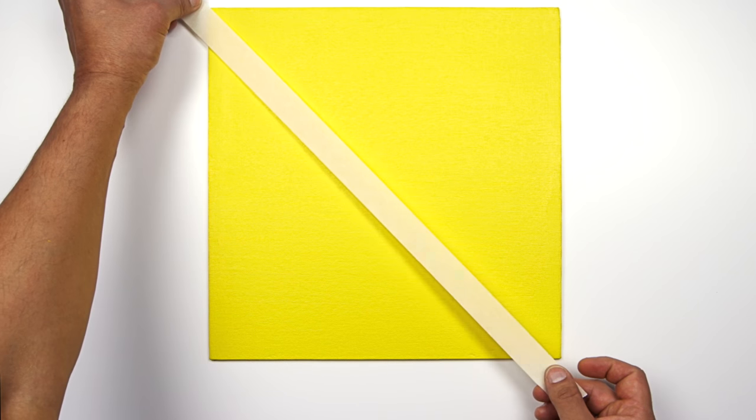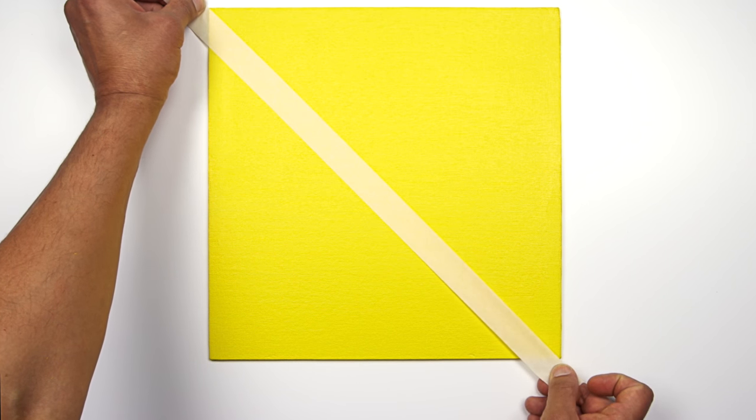In this example I've used two layers of Winston Newton professional acrylic. The more layers that you use, the more solid the color will be, but the main thing is to allow for the final layer to dry thoroughly before we begin to apply the masking tape.